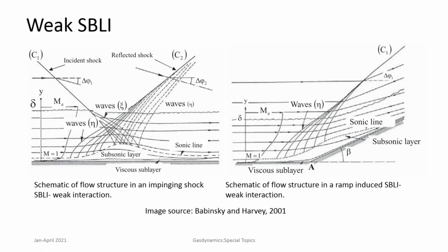A weak shock wave boundary layer interaction does not involve flow separation. It changes the local boundary layer characteristics and may slightly thicken it, but the qualitative aspects of the flow features remain more or less the same. Within the boundary layer the flow is non-uniform, which is why a series of waves are produced and the shock curves. Compression waves can coalesce together to form a shock. The key highlight here is there is no flow separation.